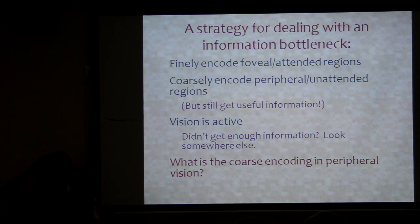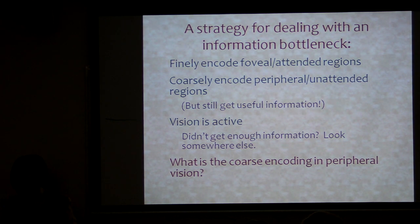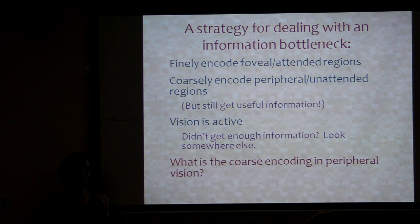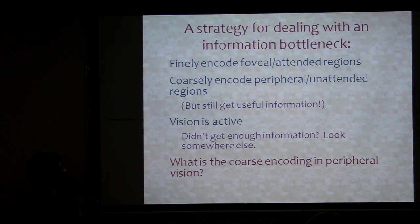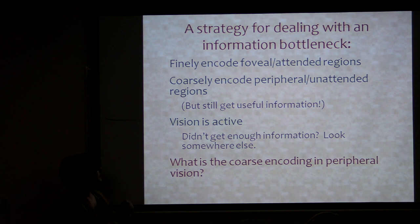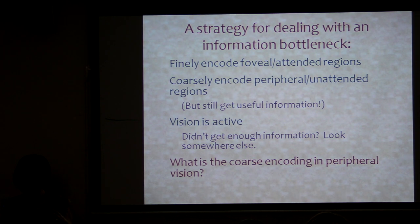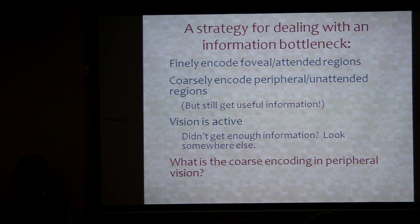So this is the big picture for the first half. There seems to be this strategy — a lot of people have hypothesized — for dealing with an information bottleneck in vision: finely encode stuff where you're looking, more coarsely encode peripheral and unattended regions, but hopefully still get as much useful information as possible into higher levels of vision. And to some extent you can make up for errors by the fact that vision is active — if you didn't get enough information, you move your eyes and get more.